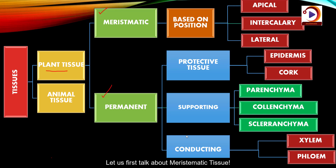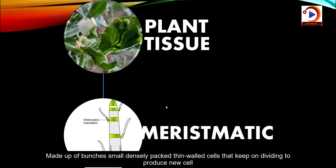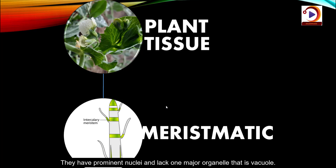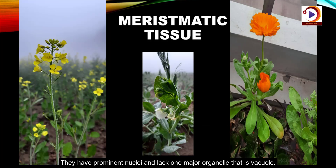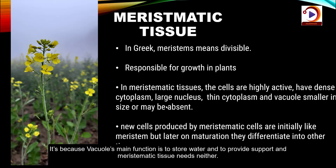Meristematic tissue is the active tissue found in regions where plants actively grow. It is made up of small, densely packed, thin-walled cells that keep on dividing to produce new cells. They have prominent nuclei and lack one major organelle — the vacuole. This is because the vacuole's main function is to store water and provide support, and meristematic tissue needs neither.